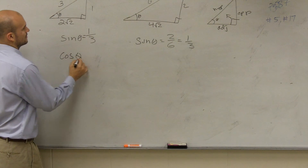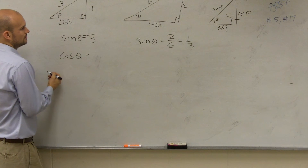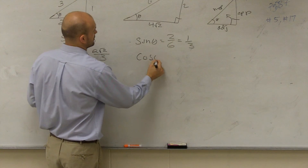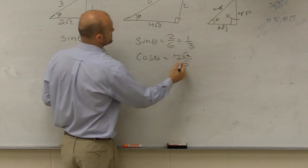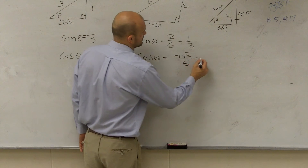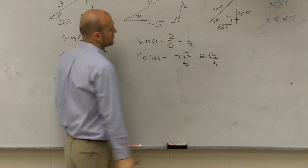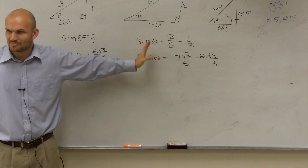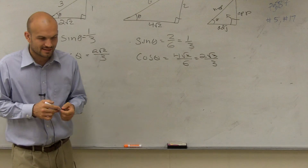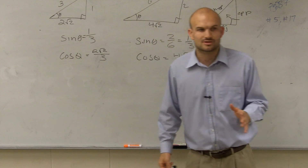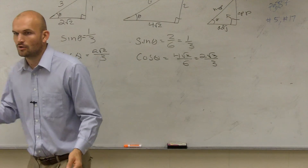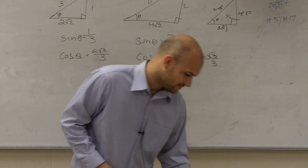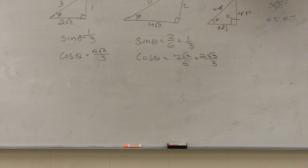Let's do cosine. Cosine of theta equals 2 square root of 2 over 3 for the first triangle. And for the second, cosine of theta equals 4 square root of 2 over 6. Well, 4 over 6 reduces down to 2 thirds, so it's the same. You can see all this is is just the same but reduced. So you can prove they are the same. The main important thing when doing right triangle trigonometry is you have to make sure you have all three sides: the adjacent, hypotenuse, and opposite side of your triangle.